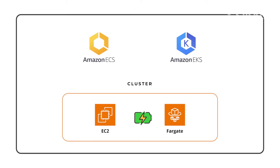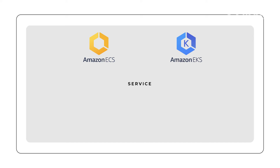Let's look at the parts of each service and compare them. To start, we need to create a cluster, which is a logical grouping of all components. Both services need a cluster to run your resources and can be powered by either EC2 instances or Fargate. Inside it, you will find one or more services running, which will have the necessary configuration to show your app to the world, like connections to load balancers and open ports.